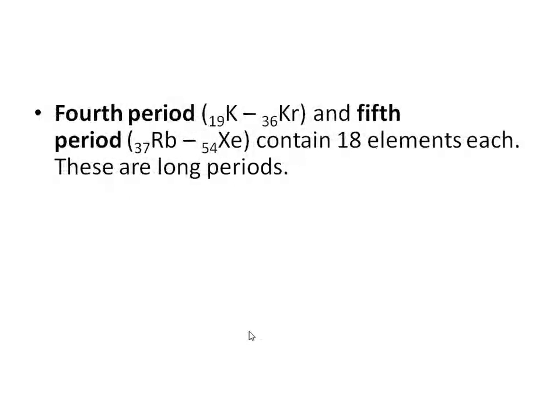The fourth period goes from potassium (atomic number 19) to krypton (atomic number 36), and the fifth period goes from rubidium (atomic number 37) to xenon (atomic number 54). Both the fourth and fifth periods contain 18 elements each and are called long periods. So: the first period is the very short period, the second and third are short periods, and the fourth and fifth are long periods.